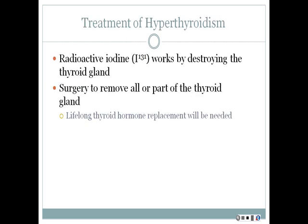Treatments include radioactive iodine, which works by destroying the thyroid gland, or surgery to remove all or part of the thyroid gland. Treatment is aimed at either treating the primary cause or treating the symptoms. If the gland is removed or destroyed, the patient will require hormone replacement for the rest of their life after these procedures.